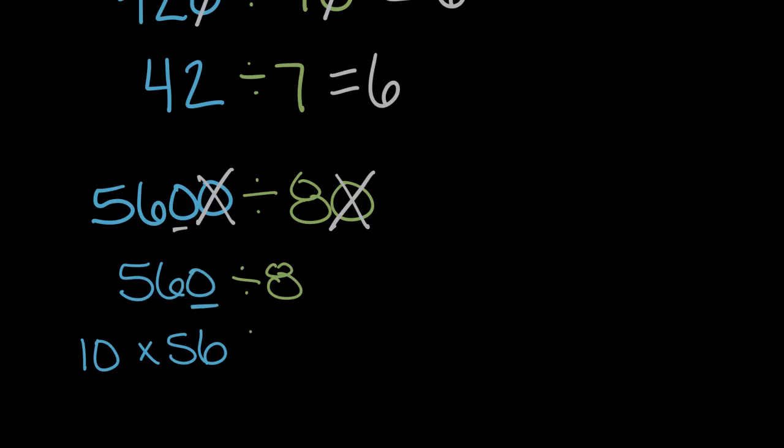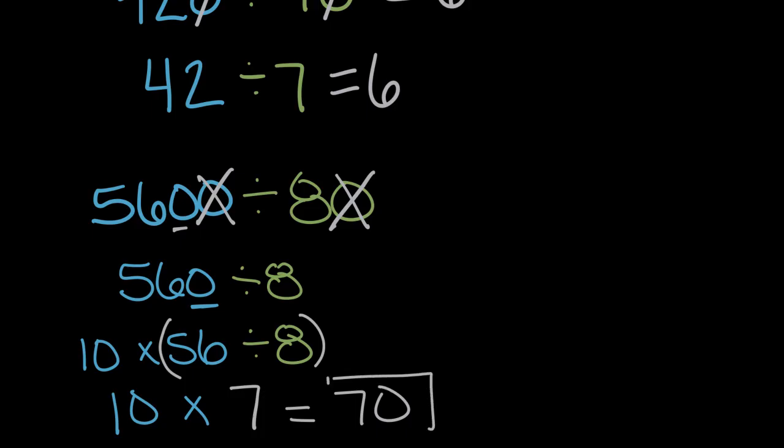And rewriting it this way makes it so now I have a division problem right here, 56 divided by eight, that we can solve. 56 divided by eight is seven. And then we still have this 10 and the times sign. And 10 times seven equals 70. So our solution here when we divided 560 by eight was 70. So that means our solution up here for 5600 divided by 80 is also 70.